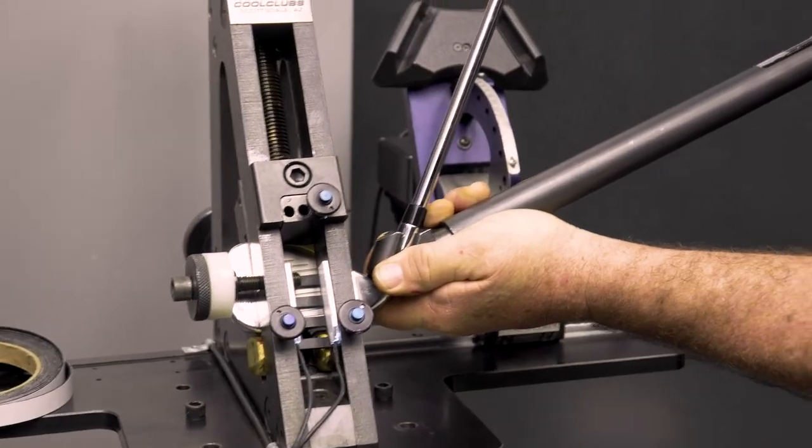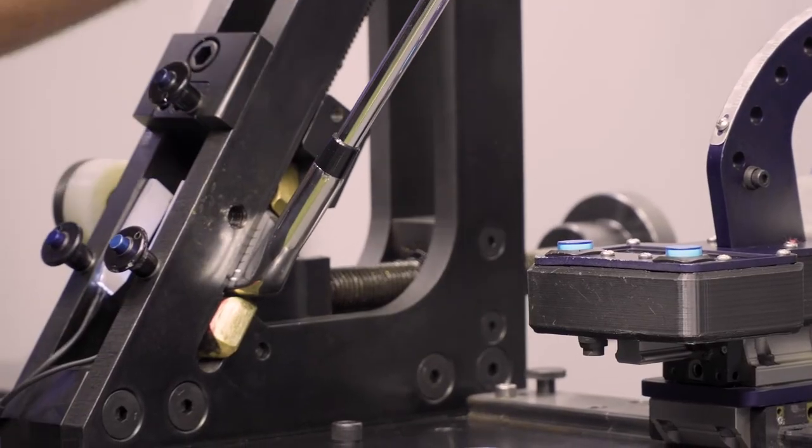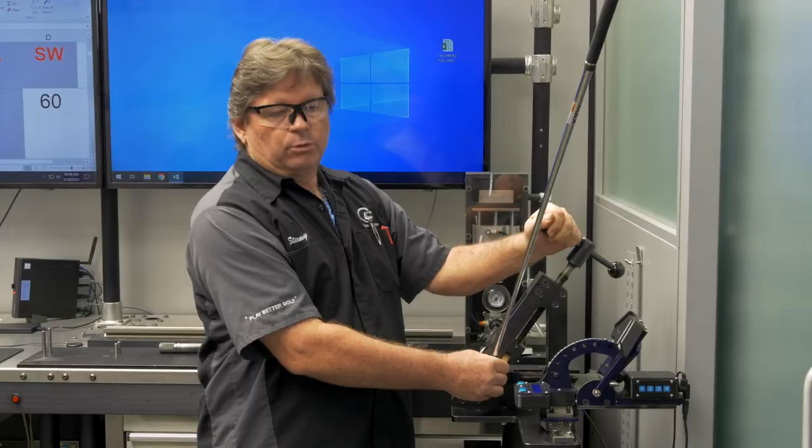I'm going to bend this club up one degree. The club is now up one degree in the lie. This is the last step of the build process before it gets shipped off to the customer. And there you go. That is the Cool Clubs Loft and Lie Iron Machine.